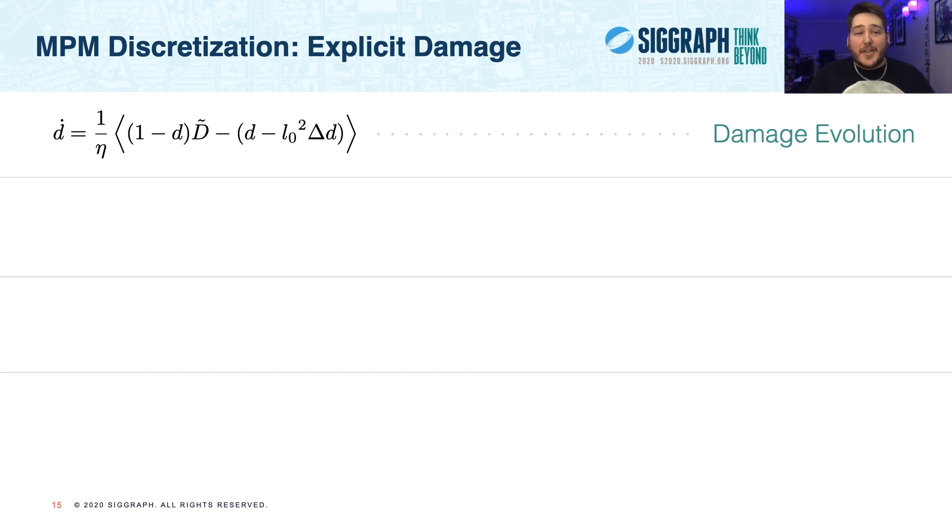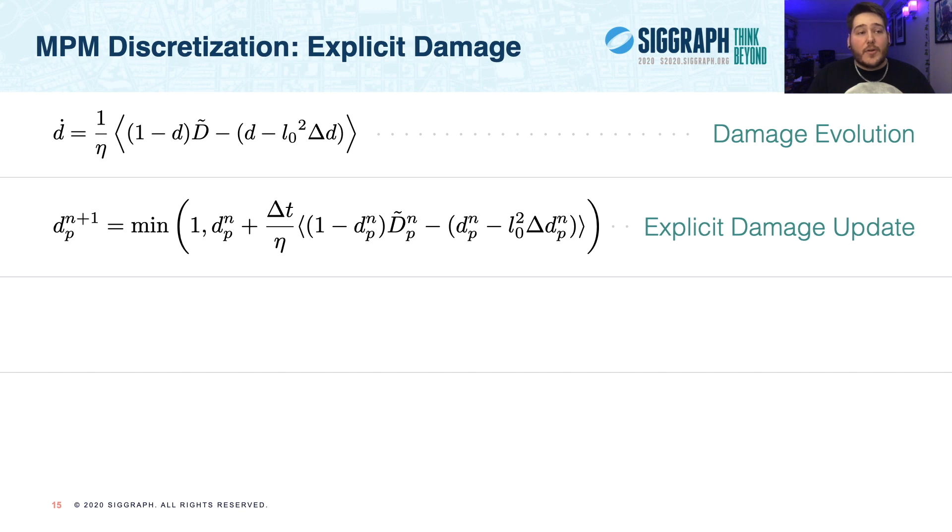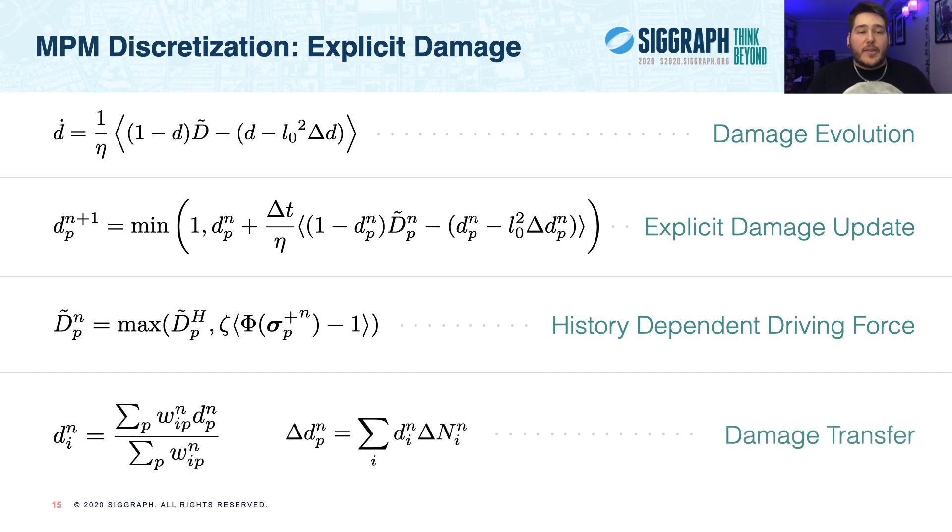Next, let's go through how we discretize our damage evolution using npm, starting with our explicit damage approach. We begin with our damage evolution equation, shown at the top, and as you can imagine, this is pretty simple to discretize and solve explicitly, but there are some key implementation details to be aware of. Firstly, in the second row, we show our expression for updating the damage of particle p from time n to time n plus 1, and notice that we always take the minima between this update and 1 to ensure that we keep the damage bounded. Next, note that the d tilde that we use in our damage update is actually a history-dependent maximum of all d tilde values ever seen by this particle, satisfying that history constraint. And finally, we must compute for each particle the damaged Laplacian, which requires that we transfer damage to the grid.